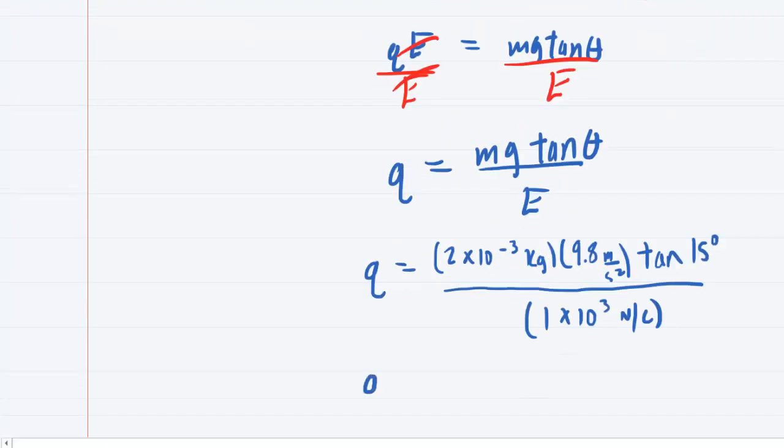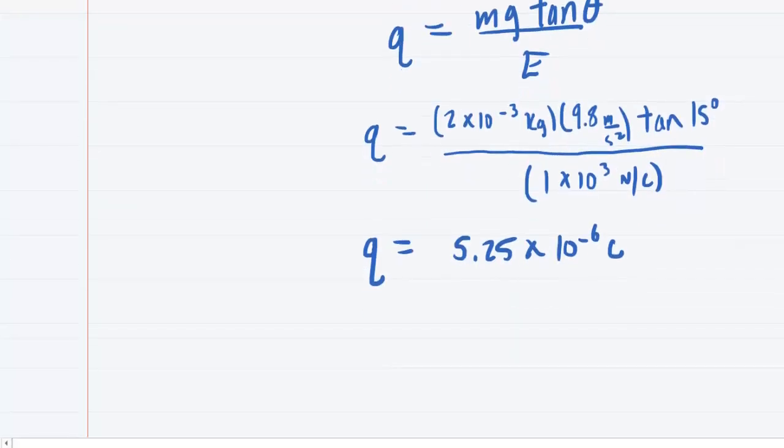And when we process this on our calculator, make sure you're in degree mode on your calculator. You're going to get 5.25 times 10 to the minus 6. This will come out in coulombs. That's the standard unit of charge. If you need to express this in microcoulombs,